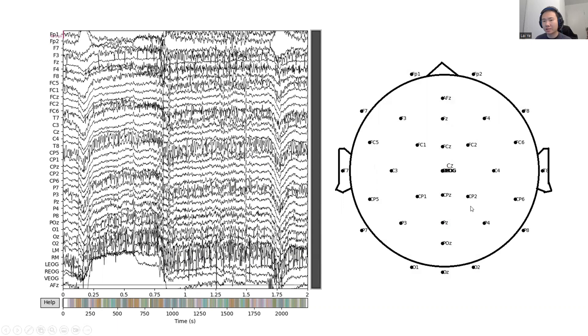As the graph shows, the dataset is recorded by 37 electrodes, which means it has 37 channels. And I will use the channel at the very top of the head, namely this channel.